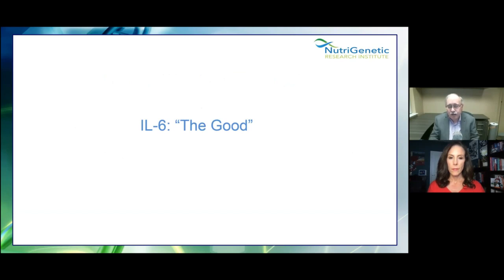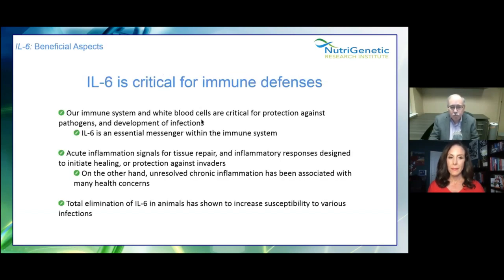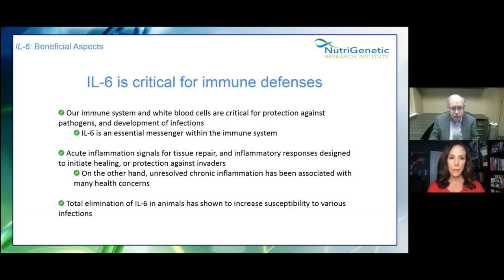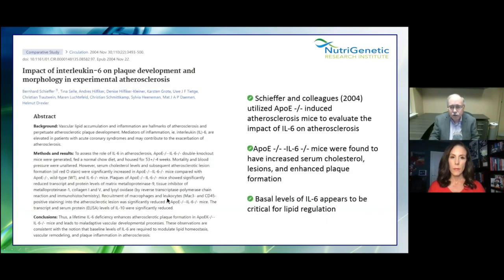We're probably going to spend about five minutes on the good and fifty minutes on the bad. Our immune systems and white blood cells are critical for protection against pathogens. IL-6 is an essential messenger within the immune system — when a foreign invader enters the body, IL-6 along with other factors comes to the rescue. Acute inflammation signals for tissue repair and protection from invaders. However, unresolved chronic inflammation is associated with many health concerns. If we get rid of IL-6 completely, organisms become susceptible to various infections — it is not our enemy unless there's too much of it.